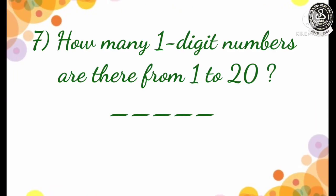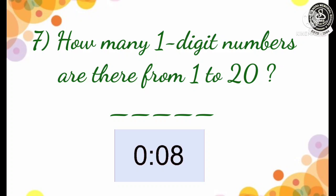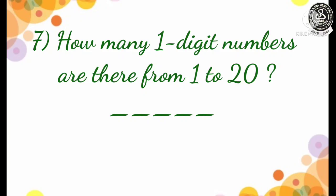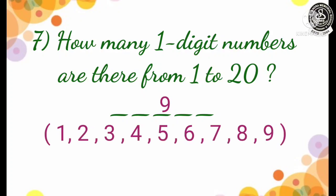Now, let us see question number 7. How many 1-digit numbers are there from 1 to 20? Your time starts now. Time over. Let us check the answer. From 1 to 20, we get a total of 9 one-digit numbers. And you can see I have shown the example.